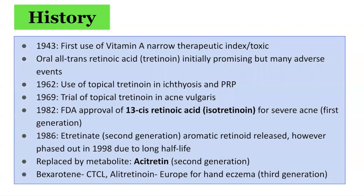To appreciate the importance of vitamin A, we can look at the history of vitamin A derivatives. In the early 1940s, vitamin A was first tested in clinical practice in dermatologic conditions, and that was when it was found to have a very narrow therapeutic index. The first oral vitamin A came in the form of all-trans-retinoic acid, otherwise known as tretinoin. In the 1960s, it was discovered that topical tretinoin was more tolerable, with less significant side effects compared to oral tretinoin, and it demonstrated promising results in conditions including ichthyosis and pityriasis rubra pilaris. Later, there was a trial of topical tretinoin in acne vulgaris, which had very promising results.